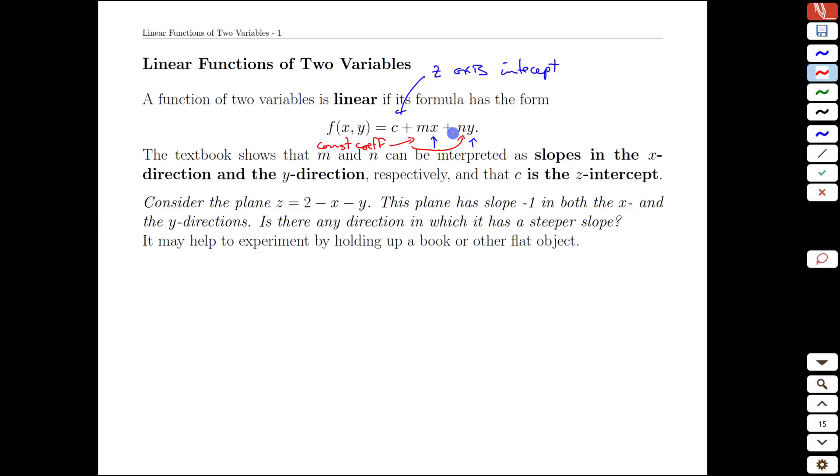no x times y, no mixing of the variables and no powers or anything but a constant times each of the variables. And you can see this is very similar to our one variable linear functions. The extension is that these constants in front of x and y now correspond to slopes with the m representing the slope in the x-direction and n representing the slope in the y-direction.